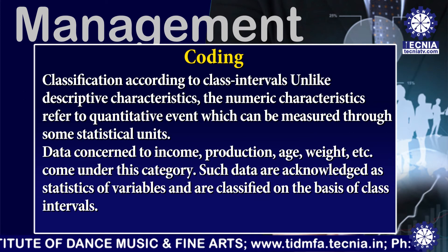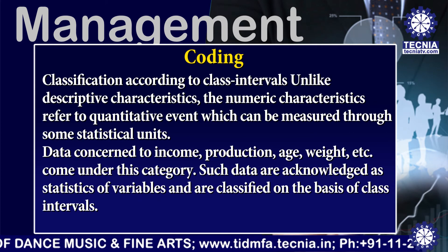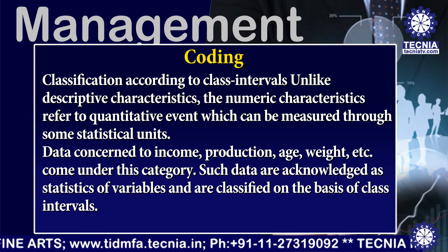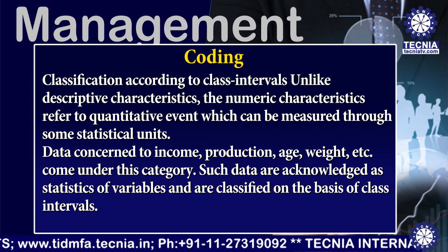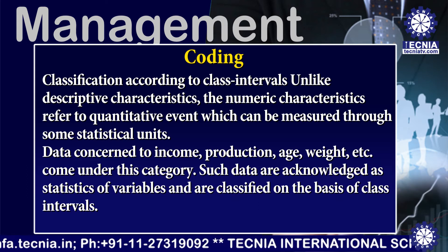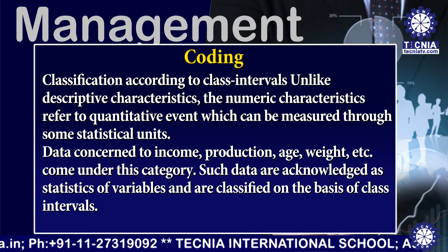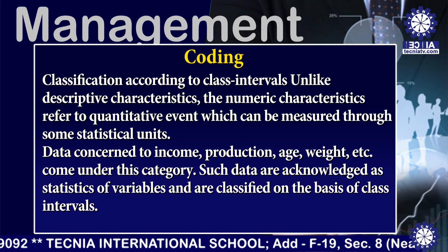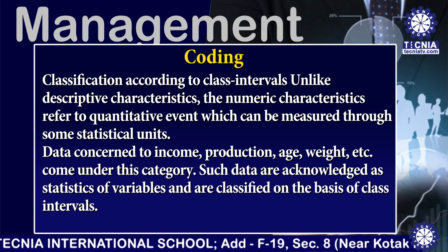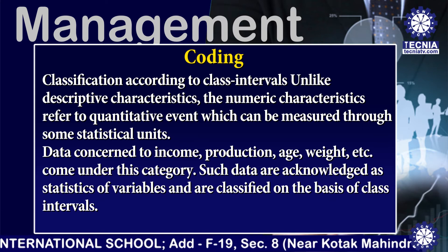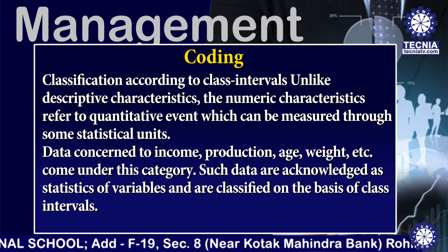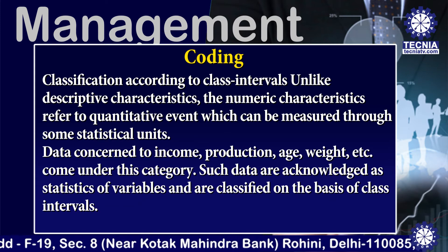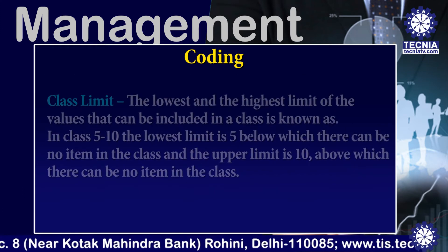The next type is classification according to class intervals. Unlike descriptive characteristics, numeric characteristics refer to quantitative phenomena which can be measured through some statistical units. Data concerned with income, production, age, weight, etc., come under this category. Such data are acknowledged as statistics of variables and are classified on the basis of class intervals.